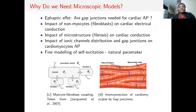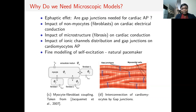So why do we need microscopic models? If we want to understand some types of intercellular couplings and their connection to the cardiac action potential, this model can actually be useful. This can also be useful to understand the impact of ionic channel distribution on the cardiac action potential.